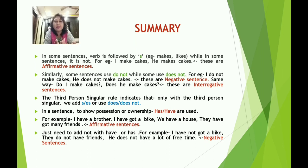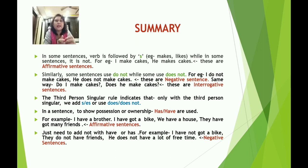For interrogative sentences: 'Do I make cakes?' and 'Does he make cakes?' The third person singular rule means that only with the third person singular do we add 's' or 'es,' or use 'does' or 'does not.' To show possession or ownership, we use 'has' or 'have' — for example: 'I have a brother,' 'I have got a bike,' 'We have a house,' 'They have got many friends.'